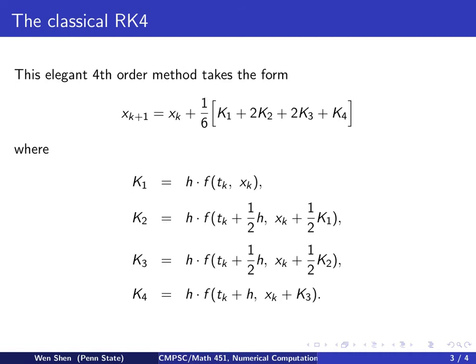One can show formally using Taylor expansion, in a very similar way as we did for Hohen's method, that this actually gives us a local error of fifth order, and therefore the total error is fourth order. We will not go into the details, but if any student is interested in working that out, you're welcome to give it a try.